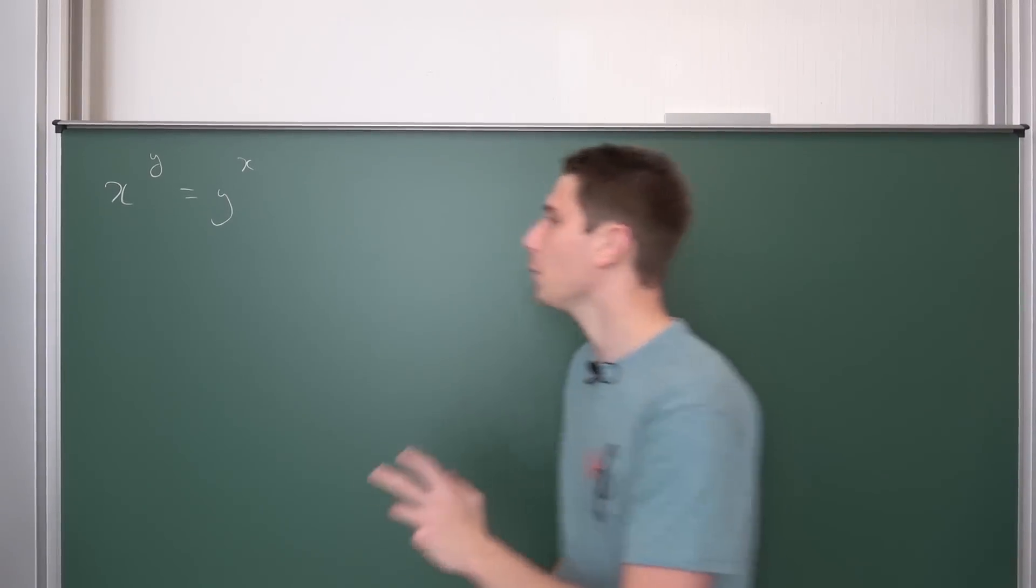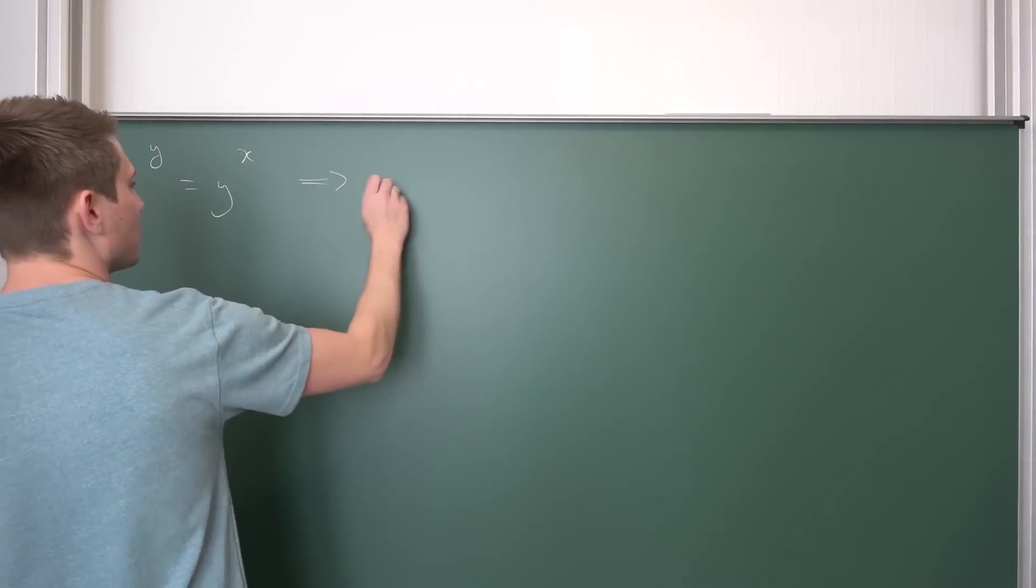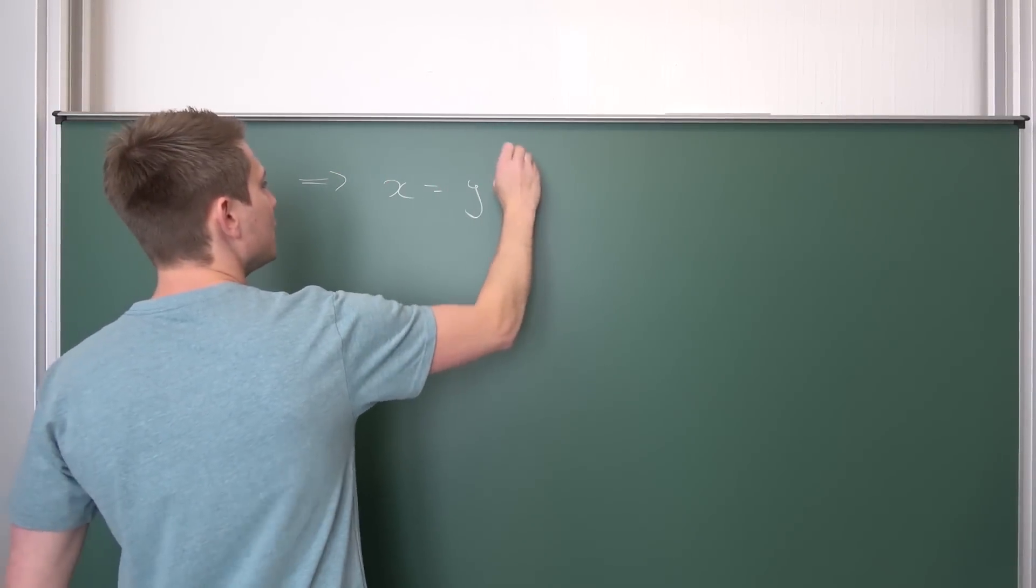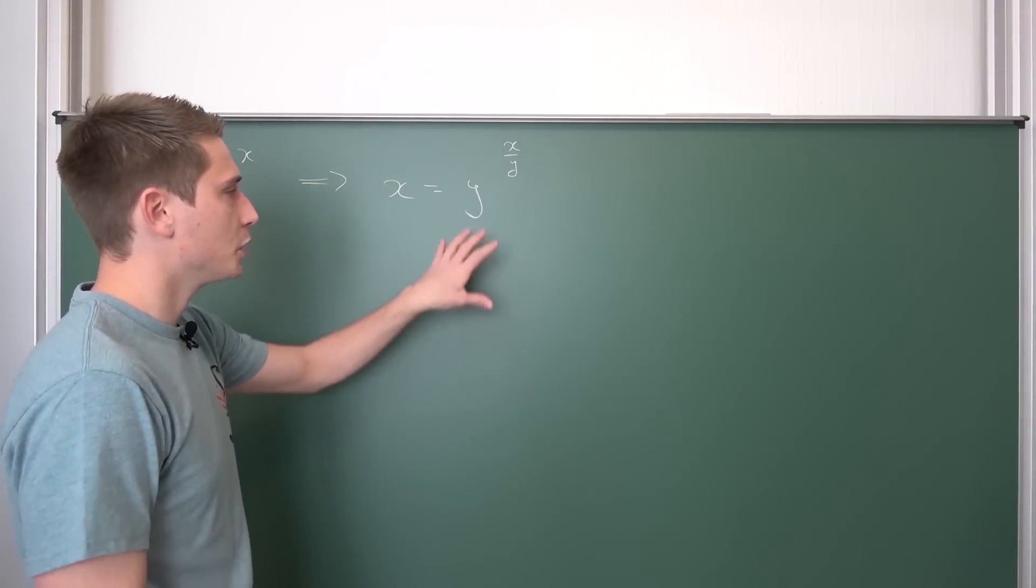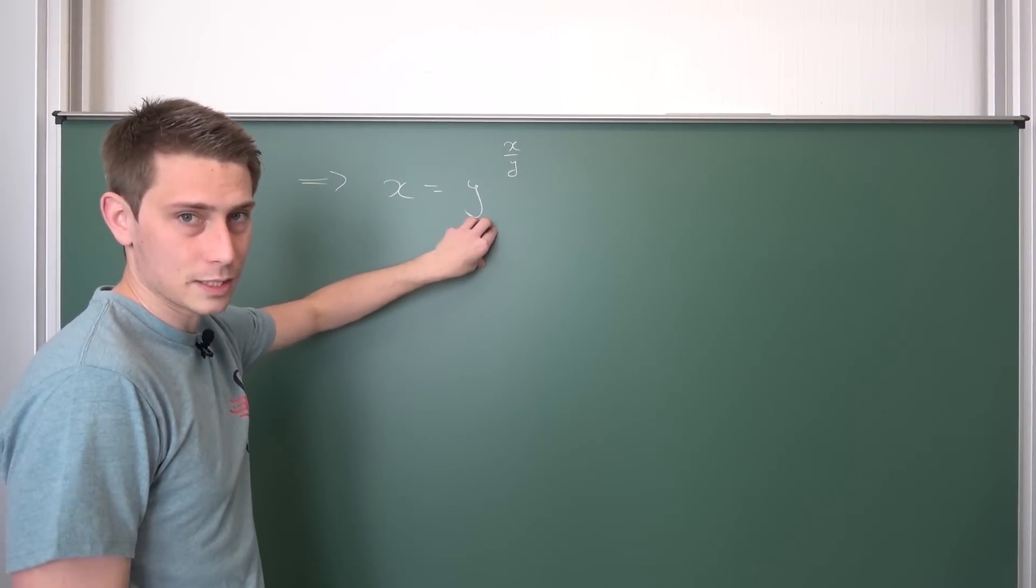We are going to end up with x being equal to y to the x over y. And now I would like to rewrite this right hand side here.